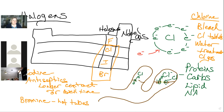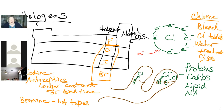Bromine is an even bigger atom than iodine. If you relied just on chlorine in a hot tub — because it's hotter — the chlorine would evaporate off faster. So we prefer to use bromine for hot tubs. If you have a hot tub, you know about bromine tablets you drop in to disinfect the water and kill skin bacteria coming off while you sit there.